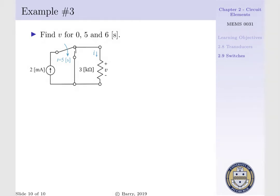We have a 2 milliamp current source that is connected to a single pole double throw switch. The top terminal of our single pole double throw switch is connected to our 3 kilo-ohm resistor, whereas the bottom terminal is connected to a short circuit.